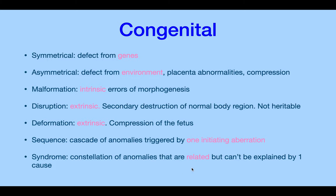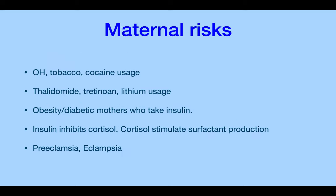A syndrome is a constellation of anomalies that are related but can't be explained by one cause — it could be environmental plus genetic. The maternal big three that mothers cannot use are alcohol, tobacco, and cocaine, which result in very severe developmental insults. Other insults include medications such as thalidomide, tretinoin, and lithium — thalidomide for anti-nausea, tretinoin for skincare (anyone on Accutane should not be on it even when trying to become pregnant), and lithium for bipolar disorder.